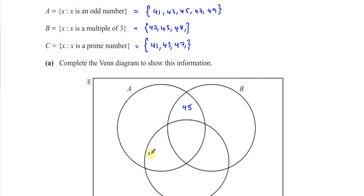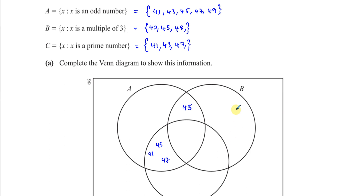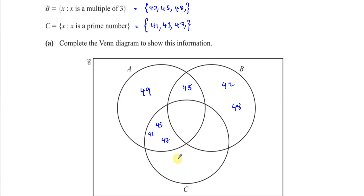Common to A and B is just 45 — the only odd multiple of three in range. Common to A and C is 41, 43, and 47 — in fact, all of C exists inside A. For B and C, there's nothing in common: a multiple of three cannot also be a prime number. So the B∩C region is also empty. In B only, we have 42 and 48.